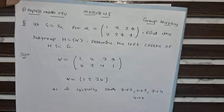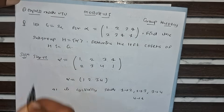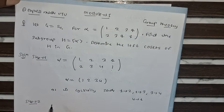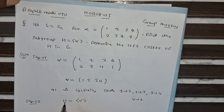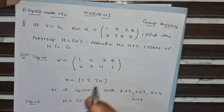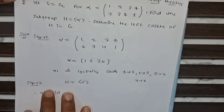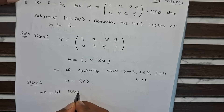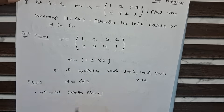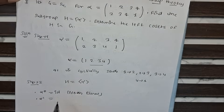Now go to our second step: find the subgroup H which is equal to alpha. As you know, alpha is a 4-cyclic group, and its powers will generate all the elements in this group. So first, alpha to the power 0 is equal to the identity element. Next, alpha to the power 1 is equal to (1,2,3,4) itself.